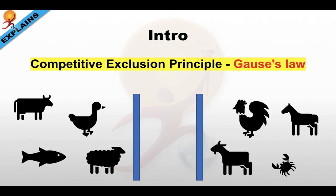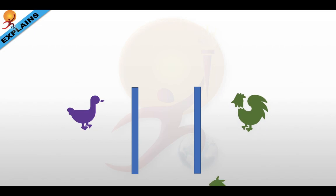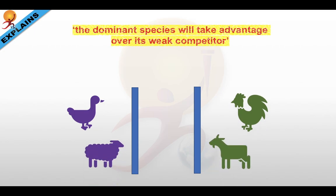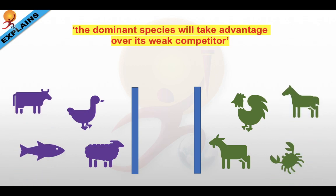In ecology, the competitive exclusion principle, sometimes referred to as Gause's law, is a proposition — a kind of hypothesis — which says that two species competing for the same limiting resource cannot coexist at constant population values. It means when two species compete for a limited amount of resources, such as food, shelter, etc., the dominant species will take advantage over its weaker competitor, causing the weaker species to get excluded from its previous territory and its population to drop over time.